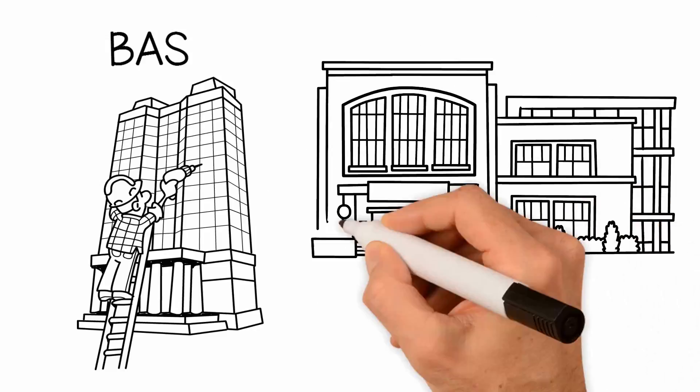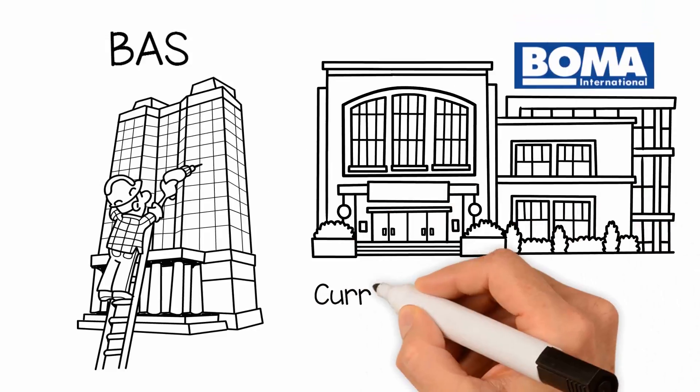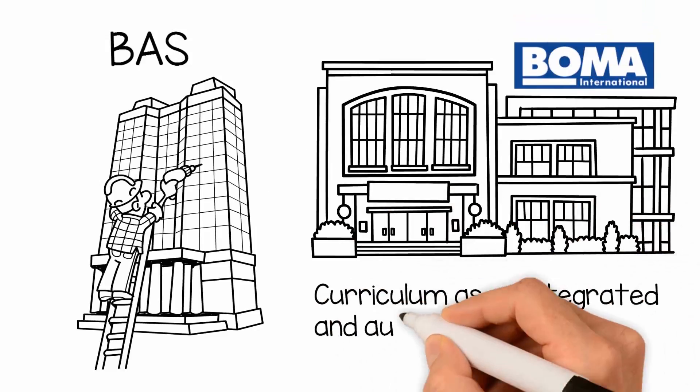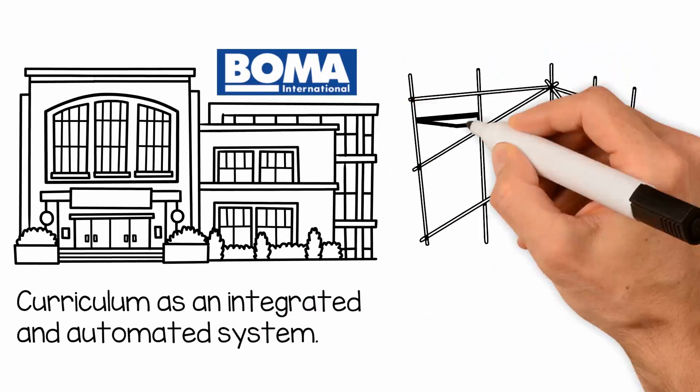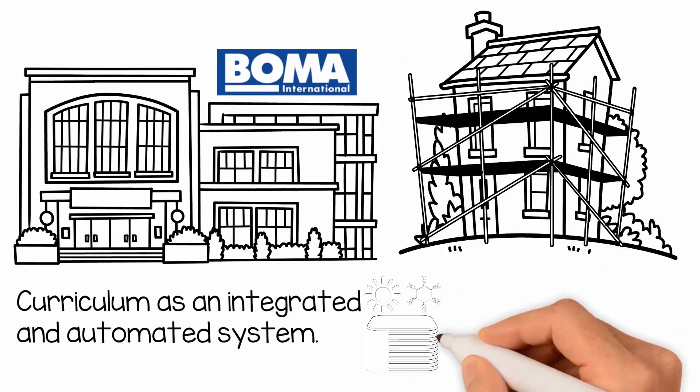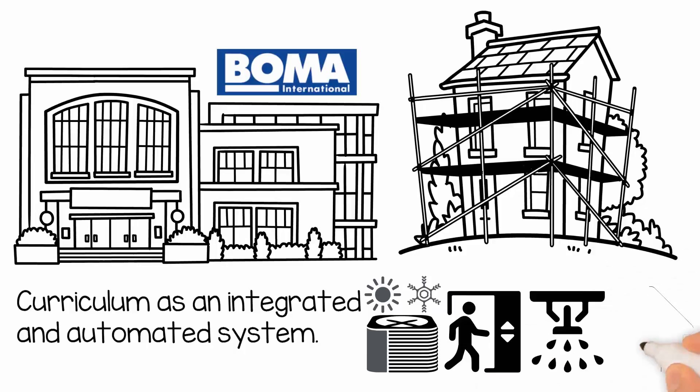The BAS is defined in BOMA International's Foundations of Real Estate Management curriculum as an integrated and automated system that controls several aspects of building operation, such as HVAC, elevators, fire suppression, and security.